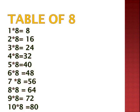Now is the table of 8. 1 eight is 8, 2 eights are 16, 3 eights are 32, 5 eights are 40, 6 eights are 48, 7 eights are 56, 8 eights are 64, 9 eights are 72, 10 eights are 80. Again from 6: 6 eights are 48, 7 eights are 56, 8 eights are 64, 9 eights are 72, 10 eights are 80.